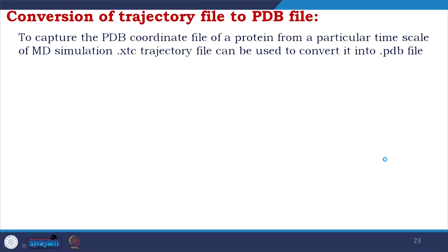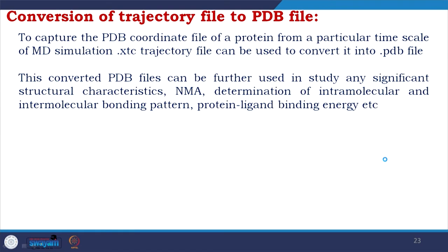How do you convert a trajectory file — the .xtc or .trr file — to a coordinate PDB file? To capture the PDB coordinate file of a protein from a particular time scale of MD simulation, the .xtc trajectory file can be converted into a .pdb file. These converted PDB files can be further used to study significant structural characteristics like normal mode analysis, determination of intramolecular and intermolecular bonding patterns, protein-ligand binding energy, etc.